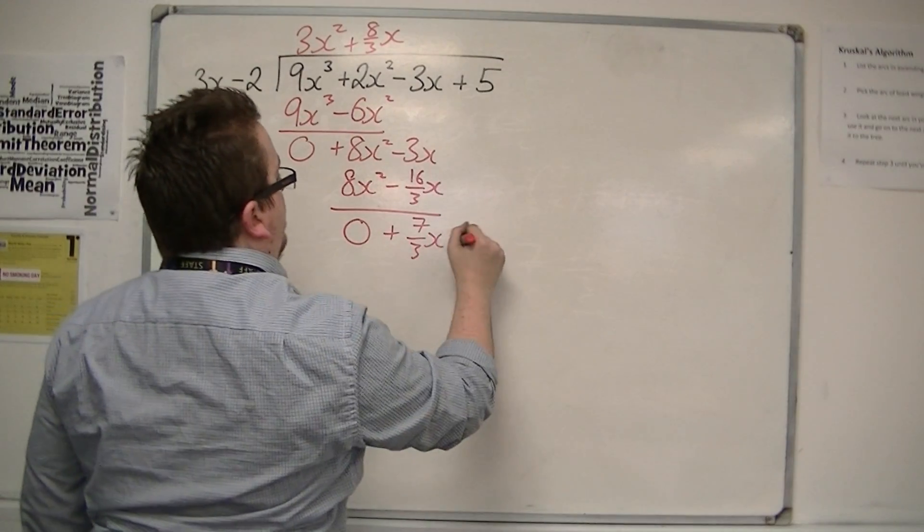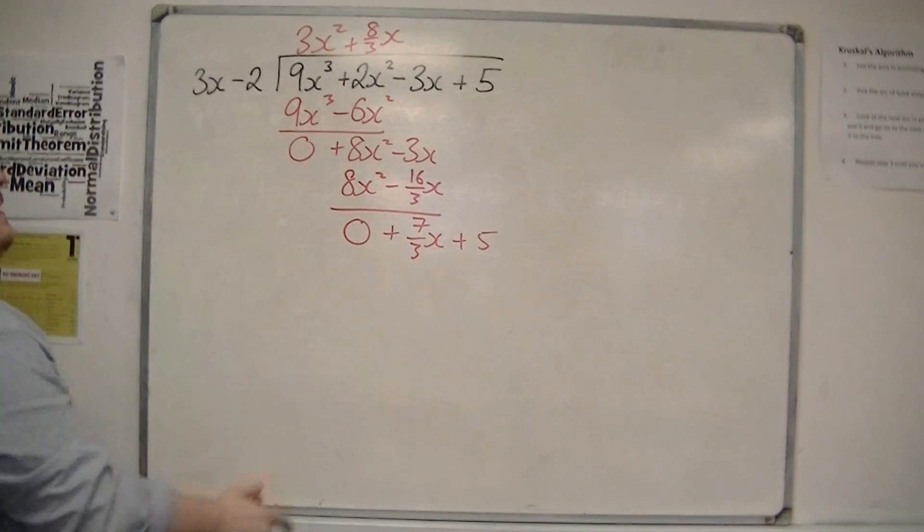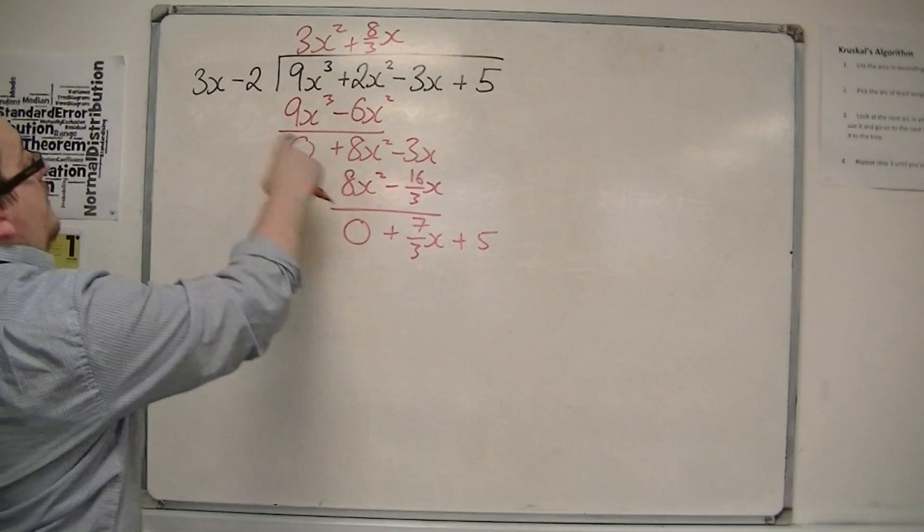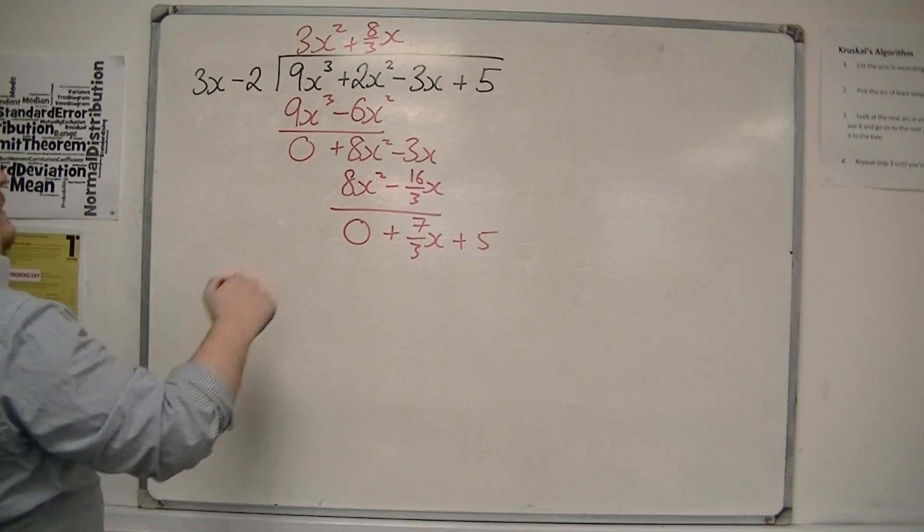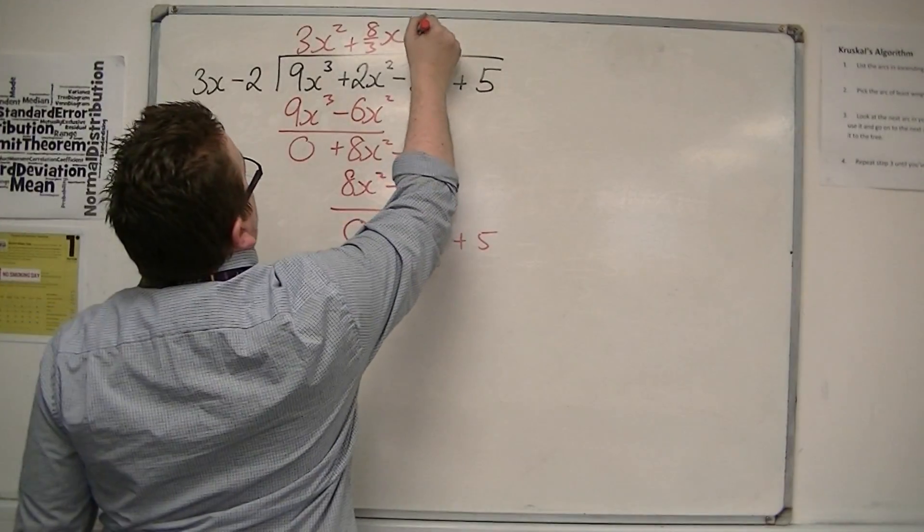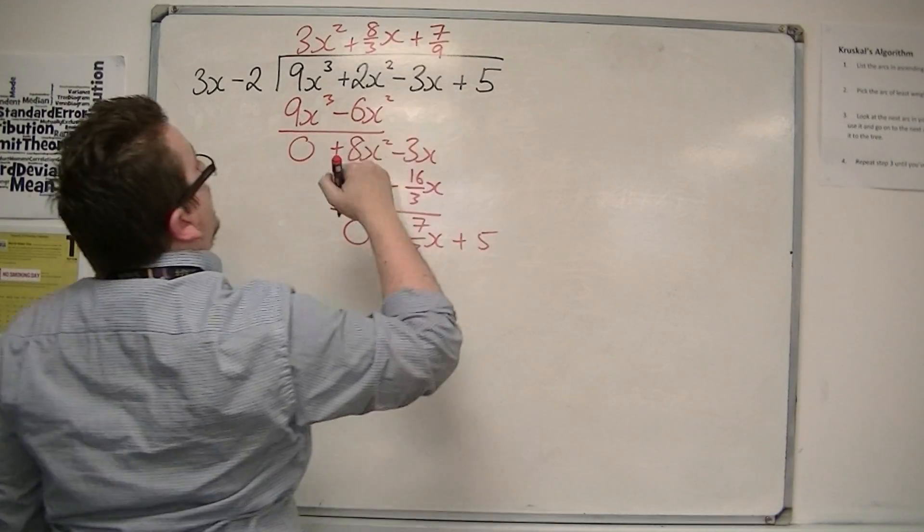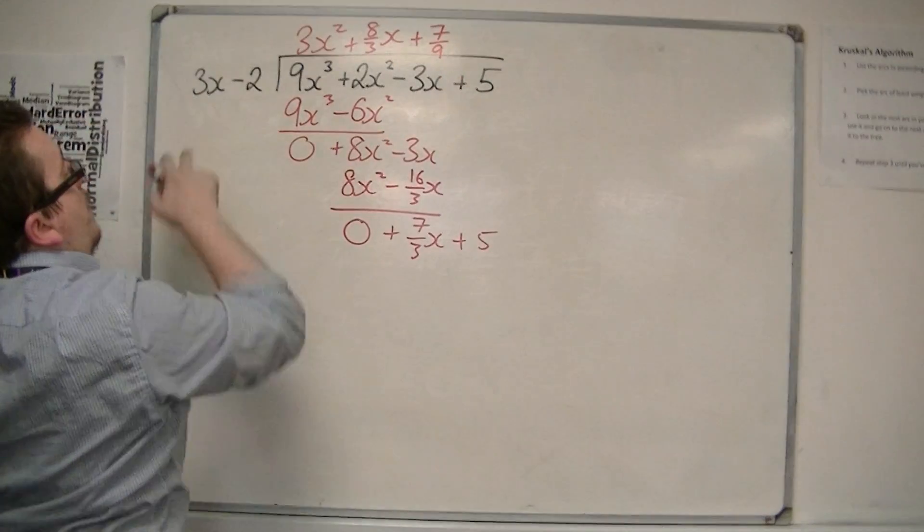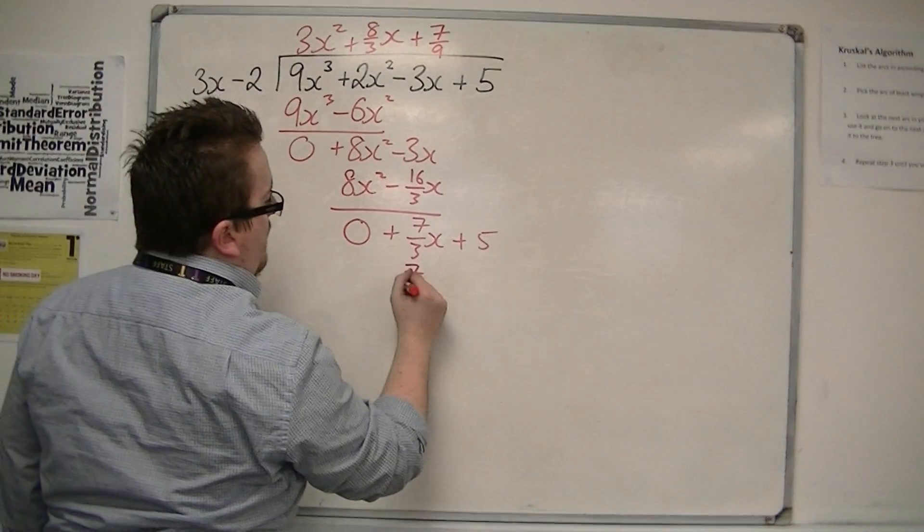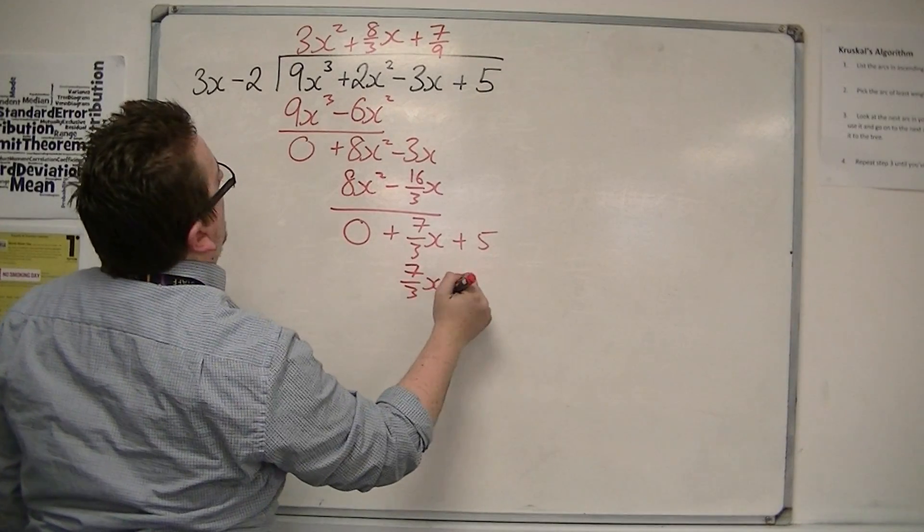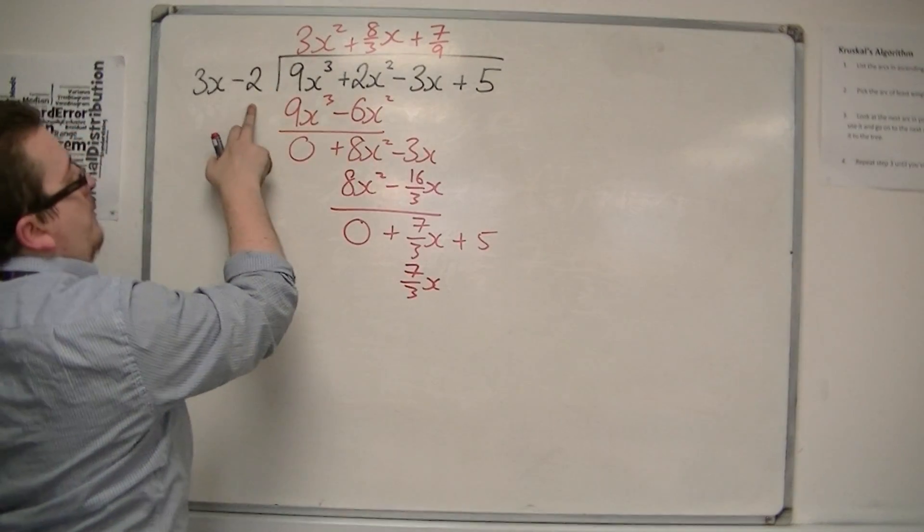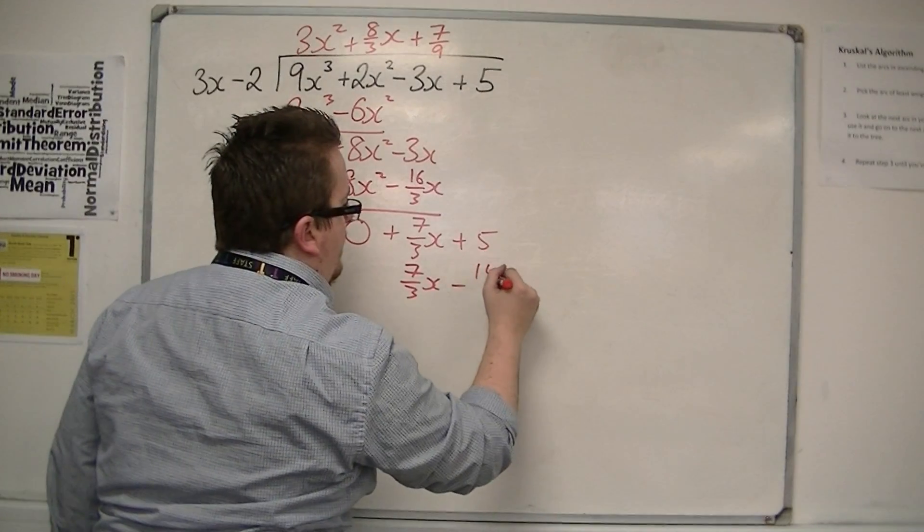Bring the 5 down, then I've got 7 thirds x divided by 3x, so I'm going to get 7 ninths. Multiply the 7 ninths by both of those terms, so I get 7 thirds x. Then I've got 7 ninths times minus 2 is minus 14 ninths.